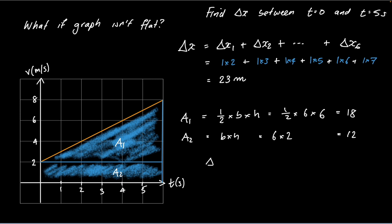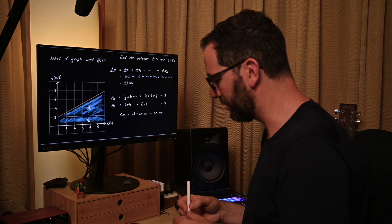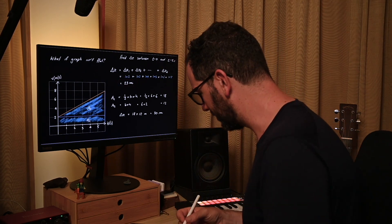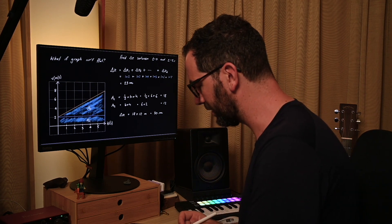So my actual displacement over that time interval equals 18 plus 12 meters, which is 30 meters. We expected it not to be the same as 23. We knew 23 was an underestimate because there was area we hadn't accounted for. So 30 kind of makes sense. That is the full area underneath that graph.